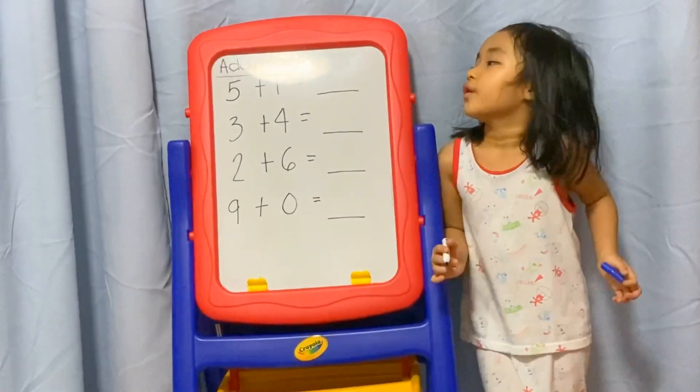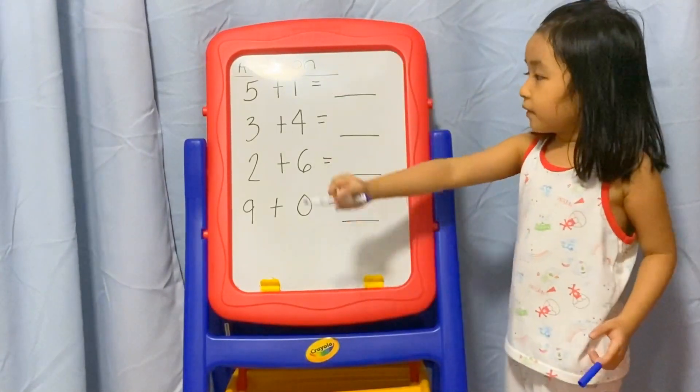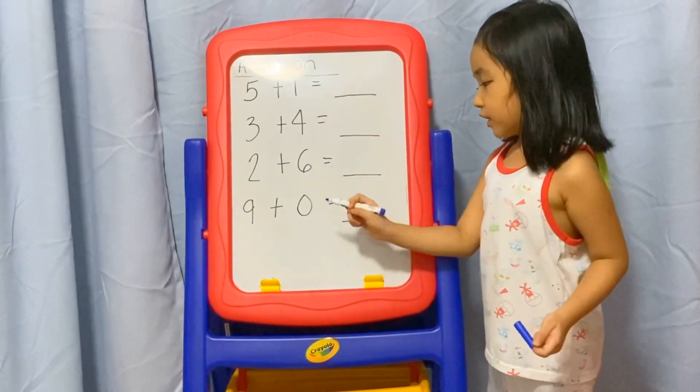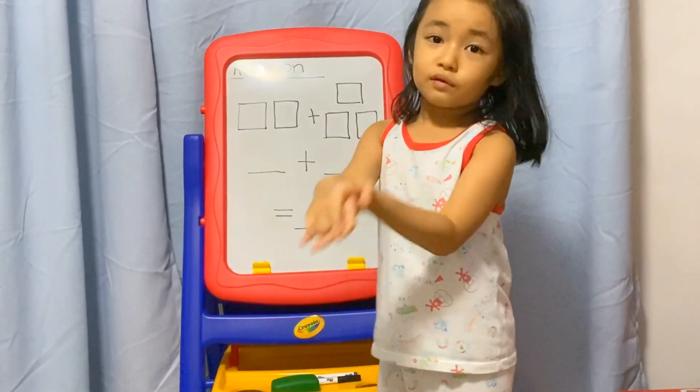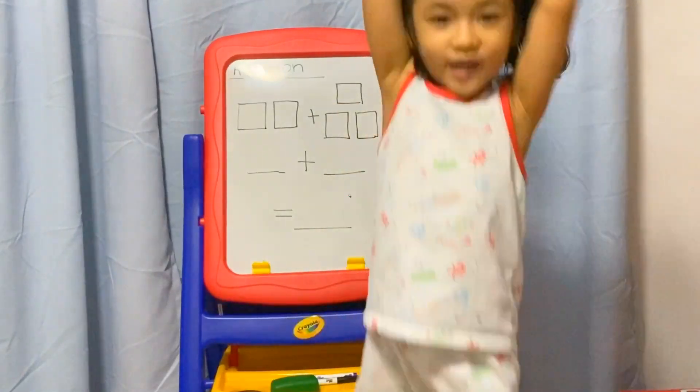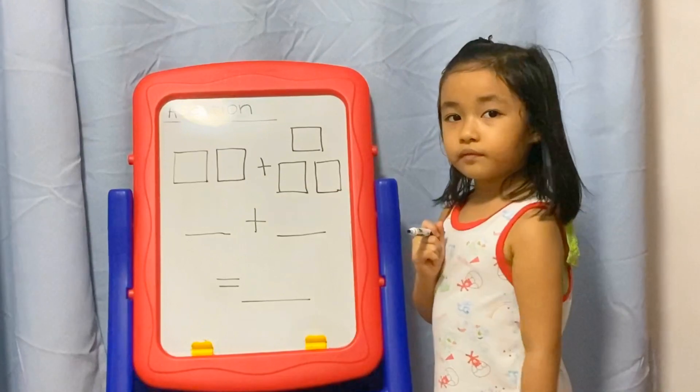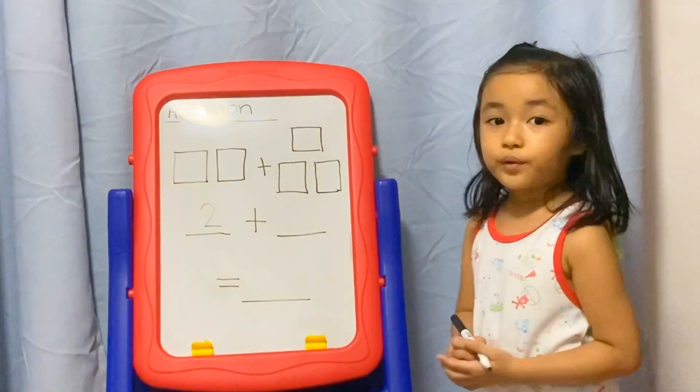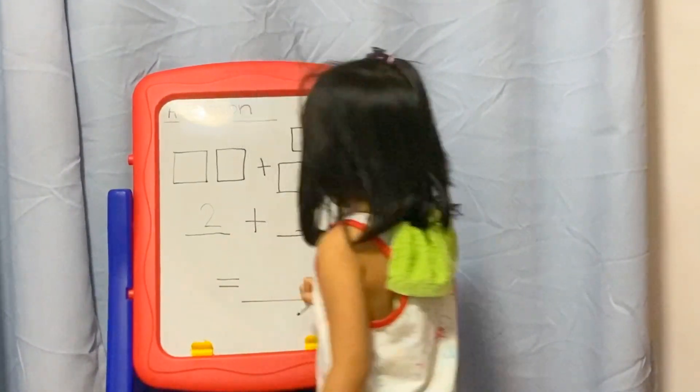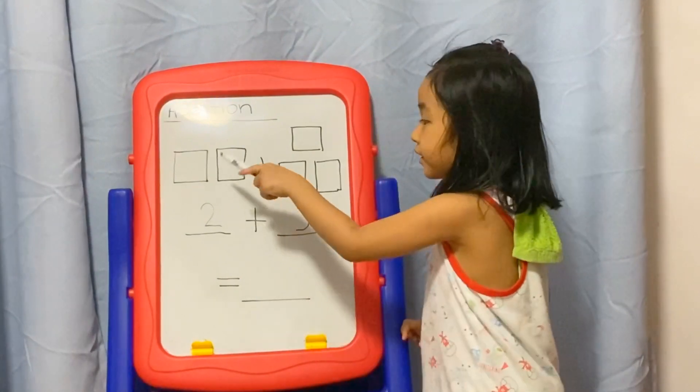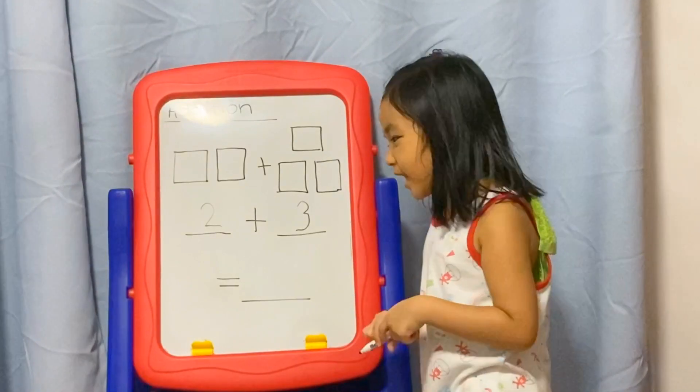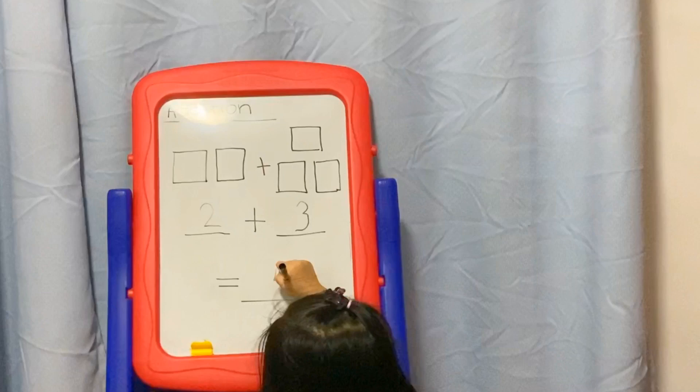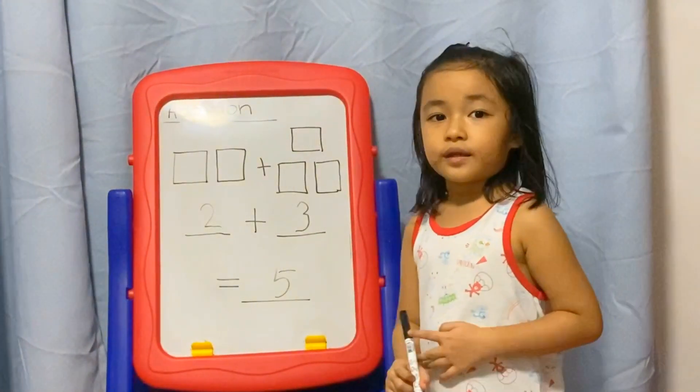Today we are going to learn addition on this whiteboard. Follow the questions here. How to add two numbers? How many squares on the left? Right, two. How many squares on the right? Right, it's three. How many squares in total? What is the total? Right, it's five. Let's count. One, two, three, four, five. Five. So let's hold on this. Five.